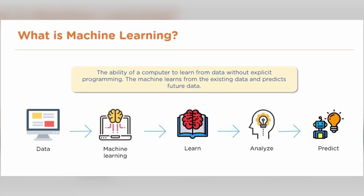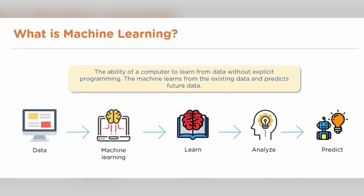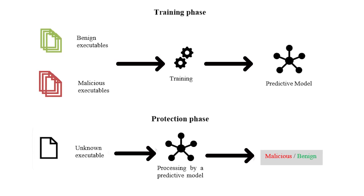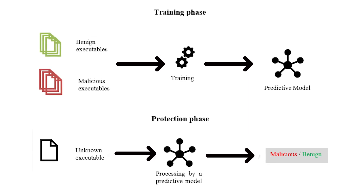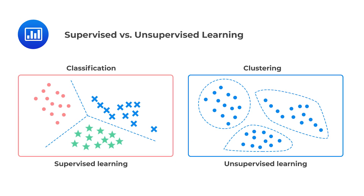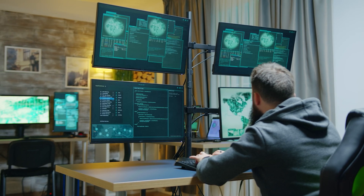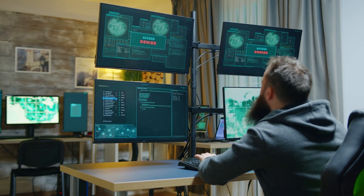For our fifth method, we have machine learning, which represents a huge shift in ransomware detection by using algorithms that can learn and adapt without explicit programming. These algorithms analyze huge datasets to identify patterns and correlations, allowing them to predict potential ransomware threats based on these learned behaviors. Two of the most common approaches are supervised learning, where models are trained on labeled datasets, and unsupervised learning, where models identify patterns without predefined labels. The strength of machine learning is its ability to detect previously unknown ransomware variants and adapt to emerging threats. However, it requires continuous training and refinement to stay ahead of evolving attack techniques.